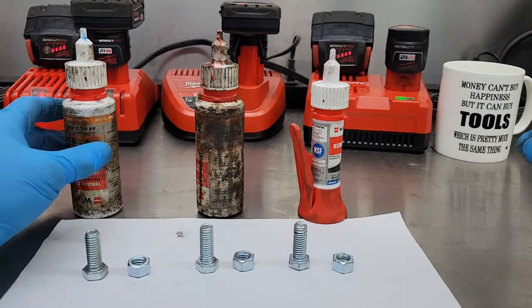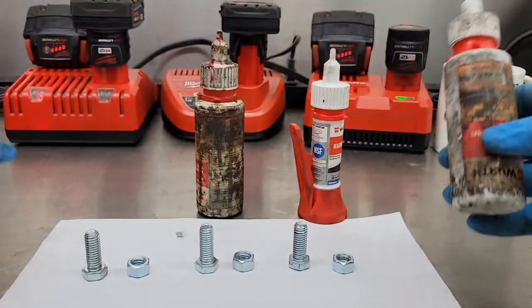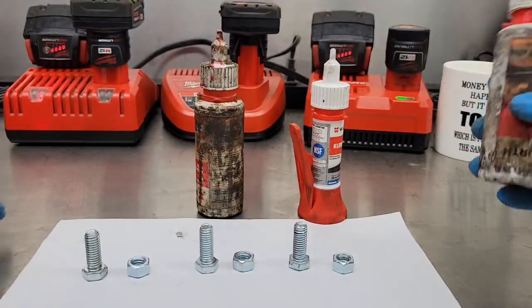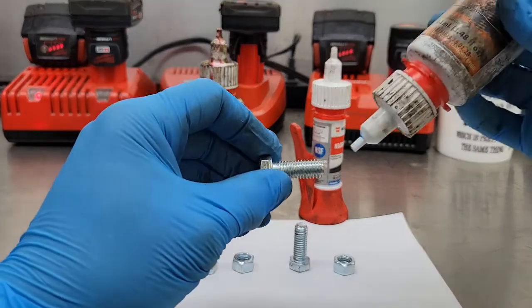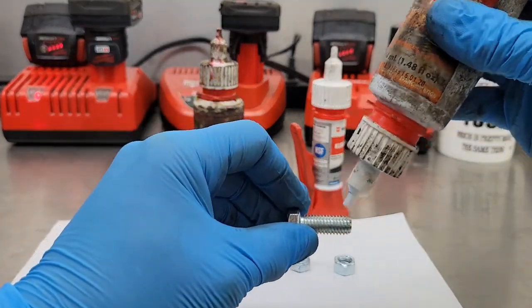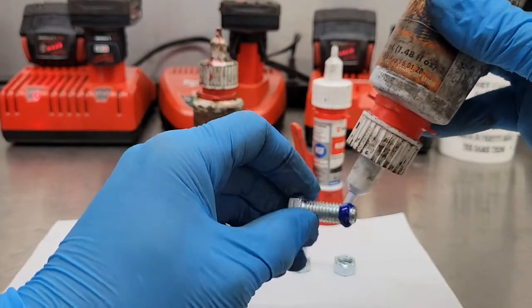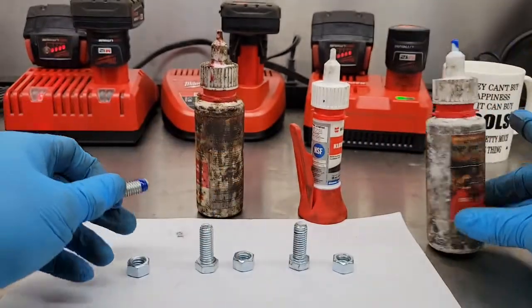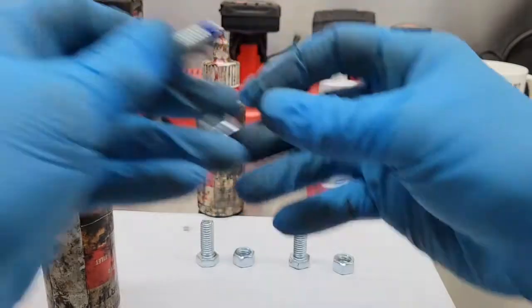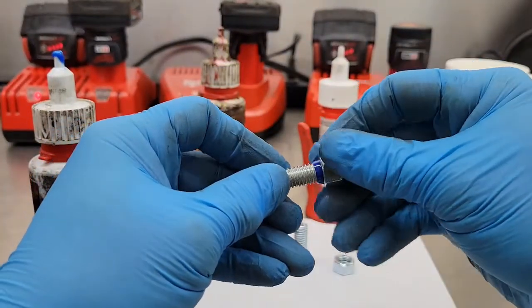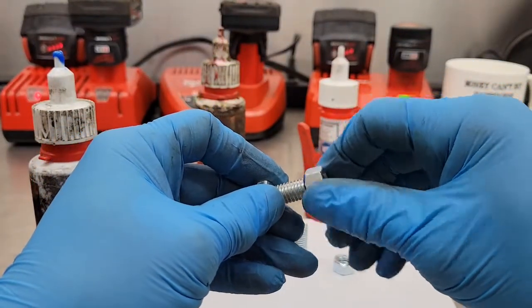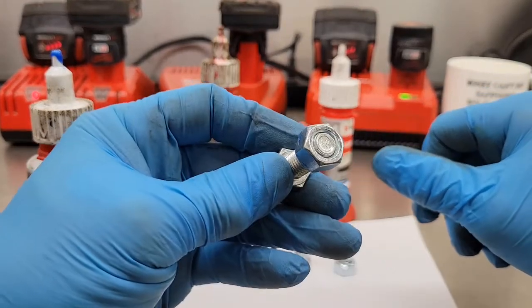So I figured I'd do a little experiment. We've got three three-eighths nuts and bolts and each one of them I'm going to put the thread locker on, put a healthy dose on, and then I'm just going to run the nut down just till the threads start showing.